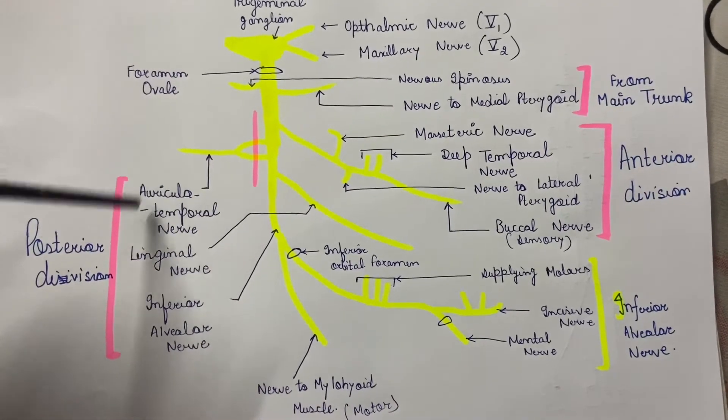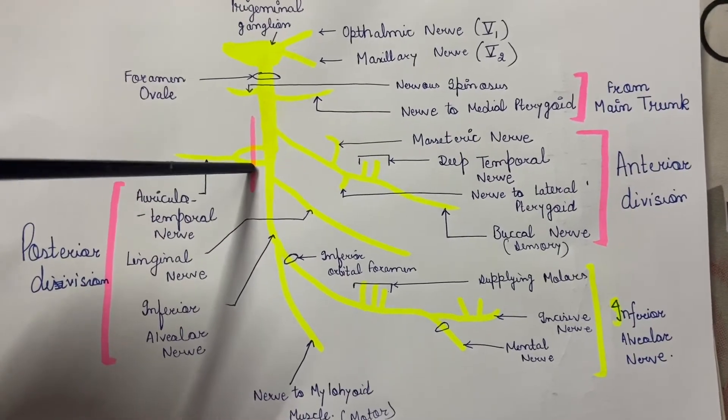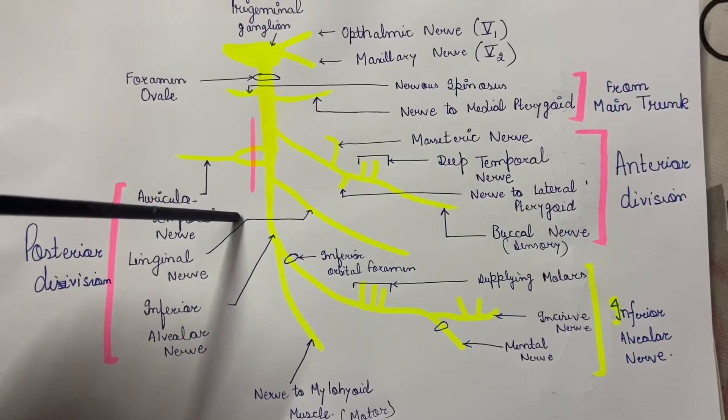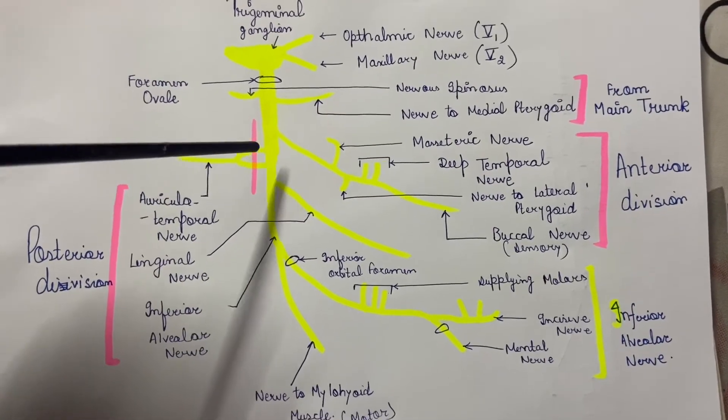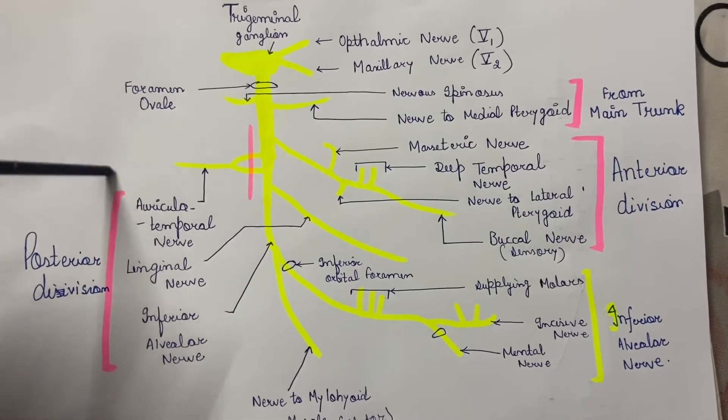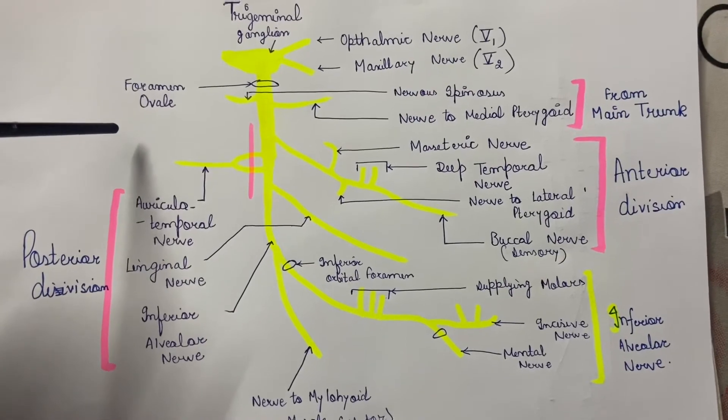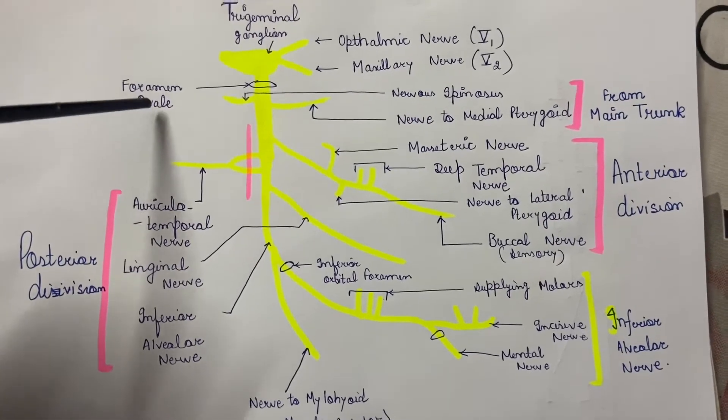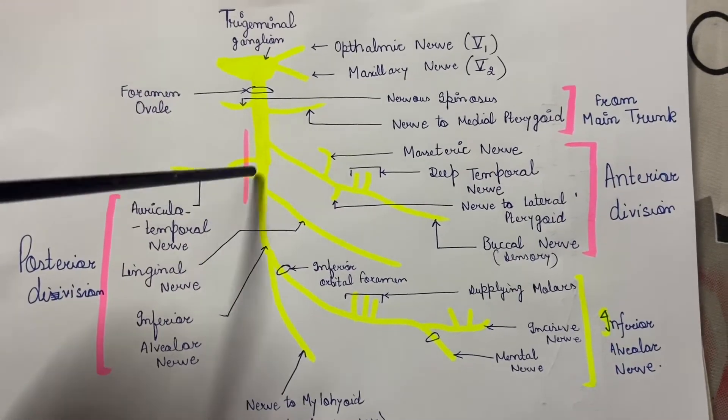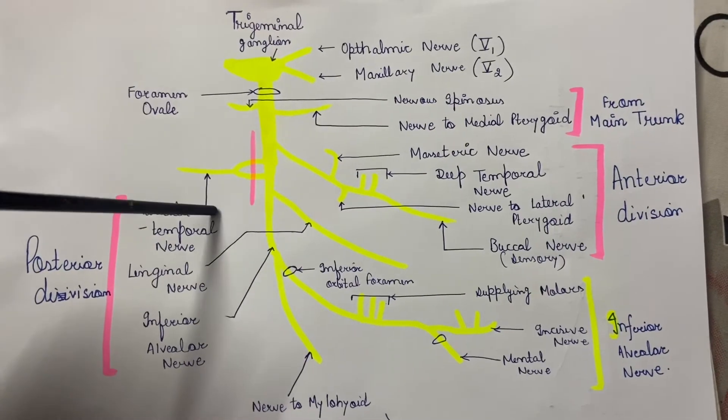First, the auriculotemporal nerve. This auriculotemporal nerve forms a loop around an artery. You will tell me which artery it is around which the auriculotemporal nerve forms a loop, and then goes to supply the area in front of the external auditory meatus, the temporomandibular joint, and the skin all over that area. I will reveal this answer in the next class.